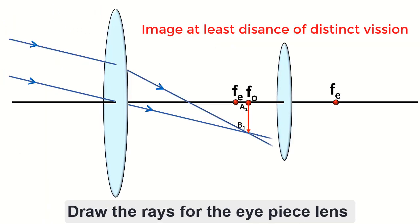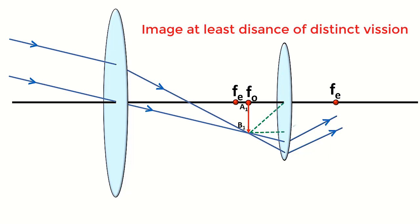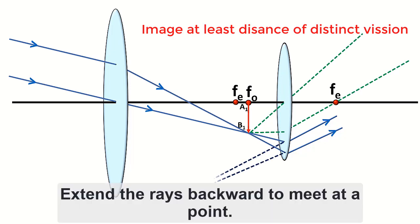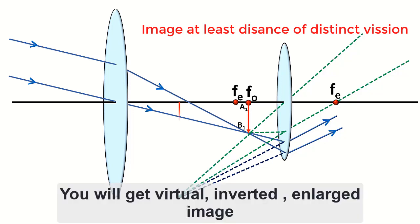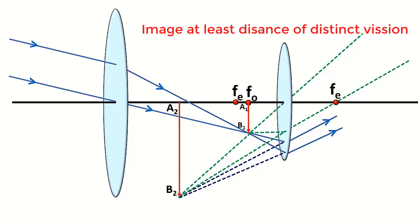Draw the rays for the eyepiece lens. Extend the rays backward to meet at a point. You will get virtual, inverted, enlarged image.